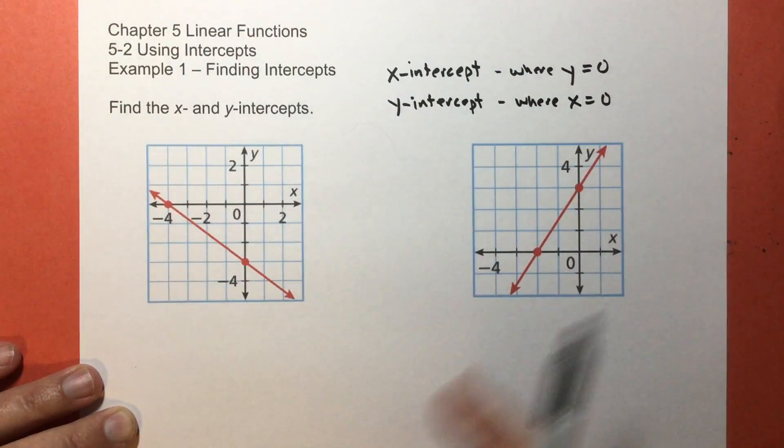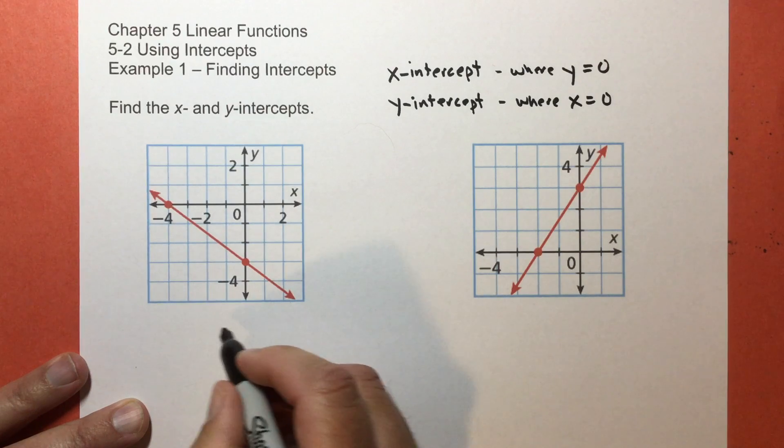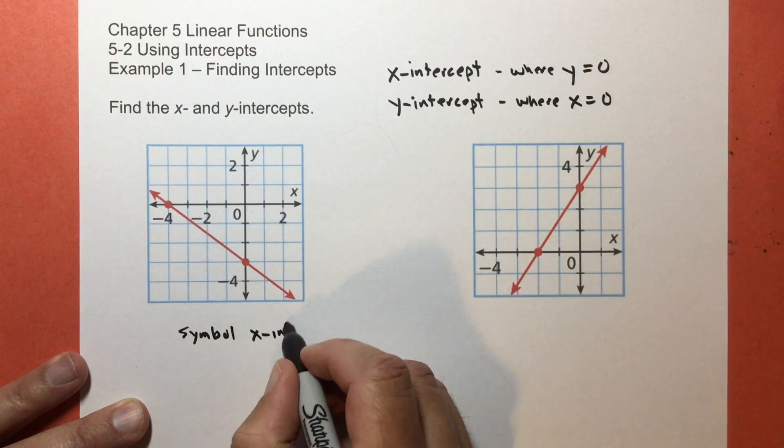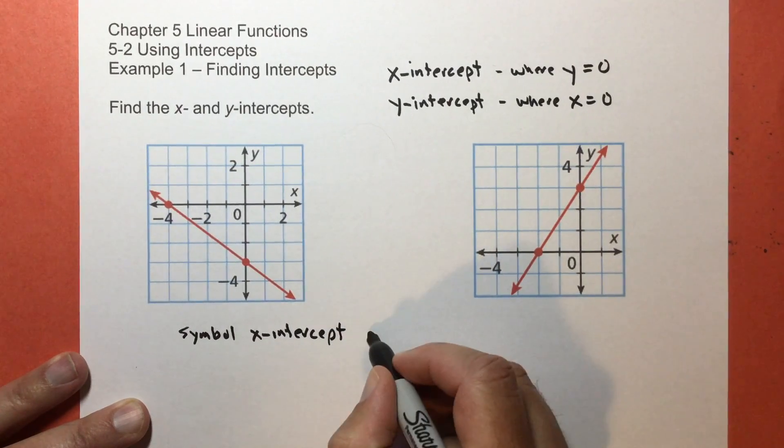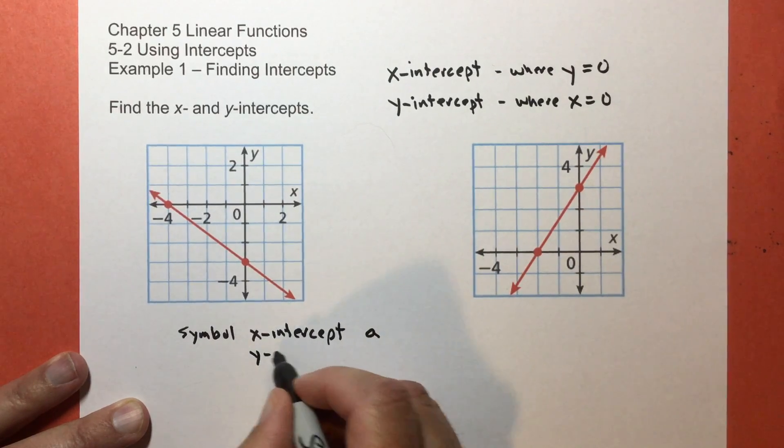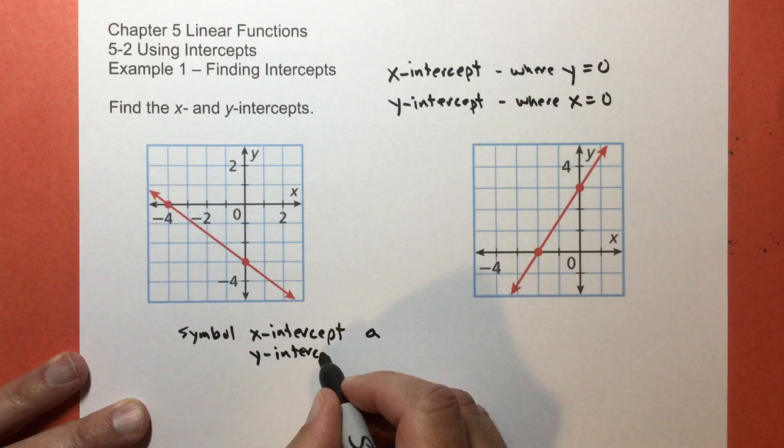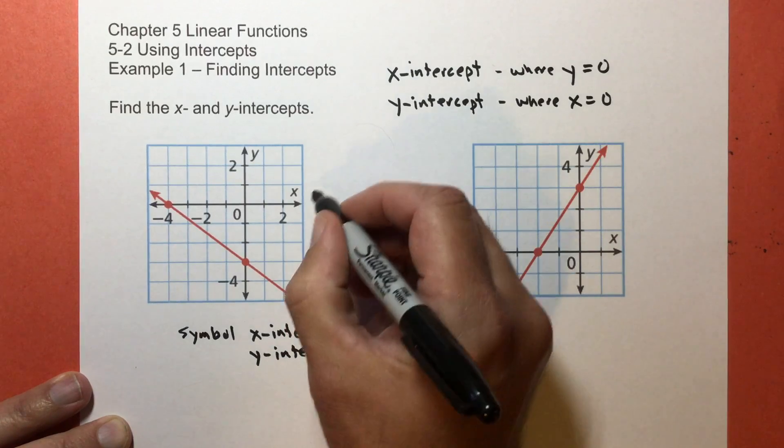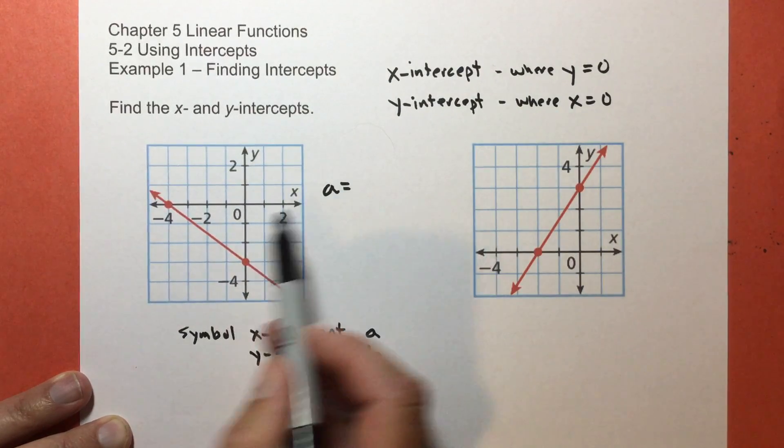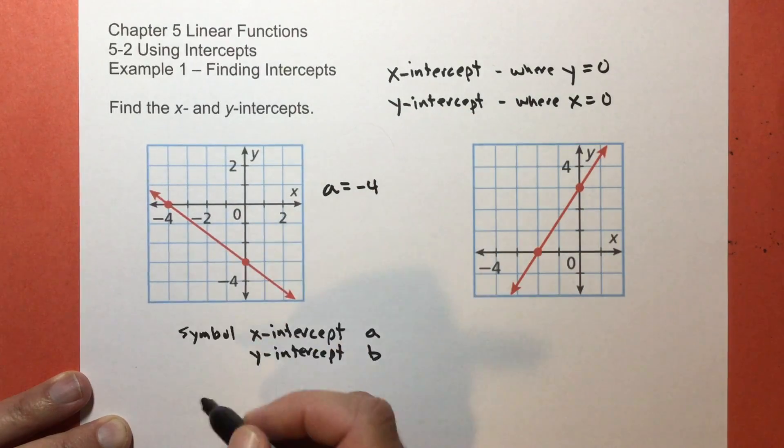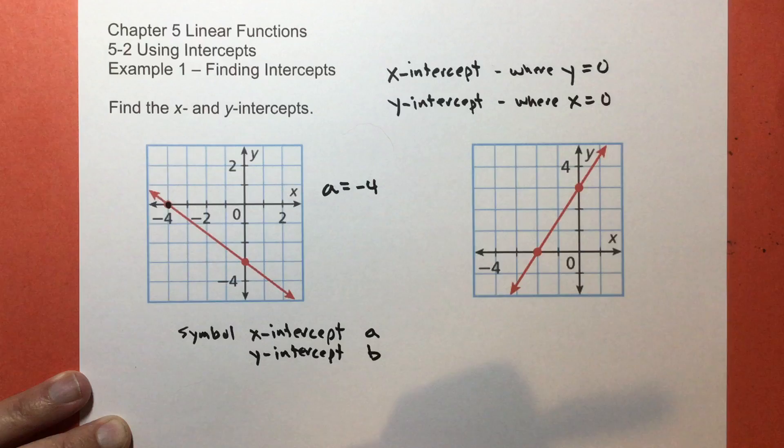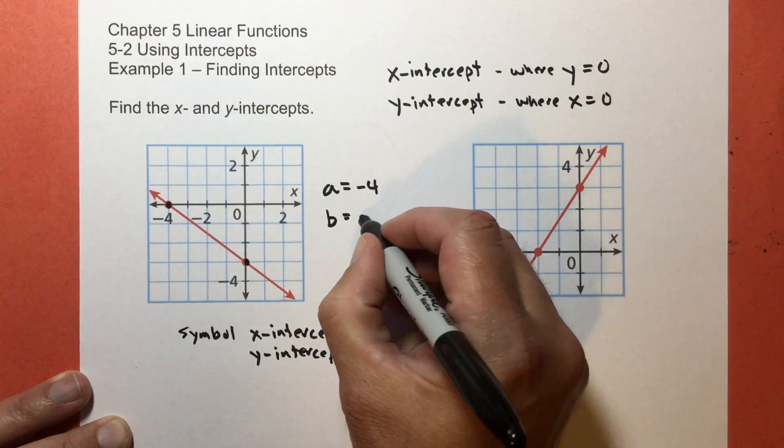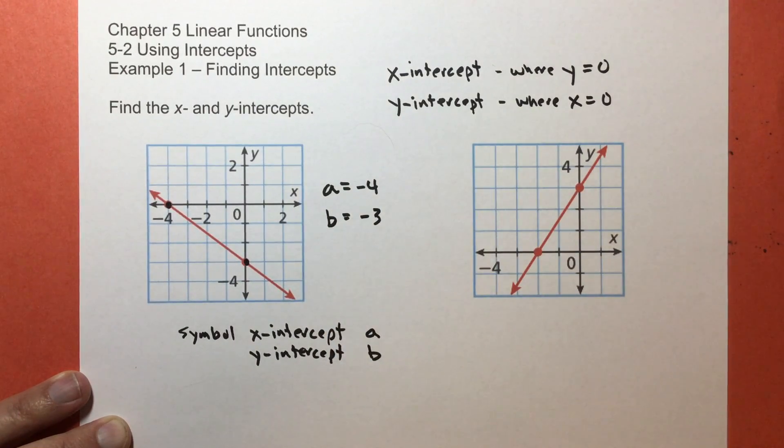For the graphs, this is actually kind of easy. The symbol for the x-intercept, we use A. For the y-intercept, we use B. So for this problem, A for the x-intercept is right here at negative four. I'll put a little dot there. And the y-intercept is right here at negative three. And that's all that you got to do for that.